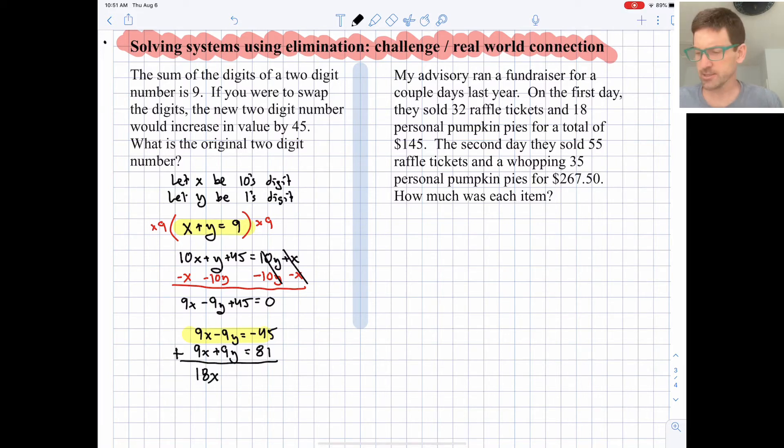So we can add these two equations together. We get an 18x equals 36. Because this y term eliminated. So that looks nice. x is equal to 2.